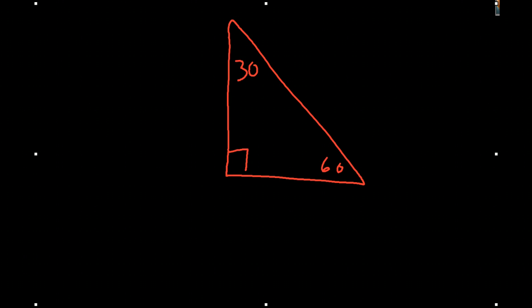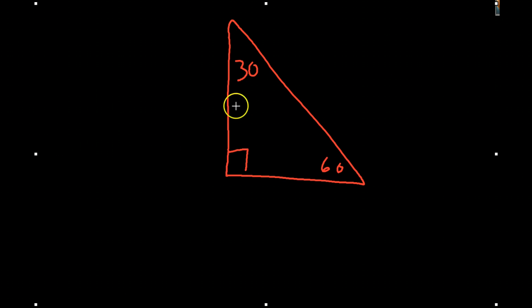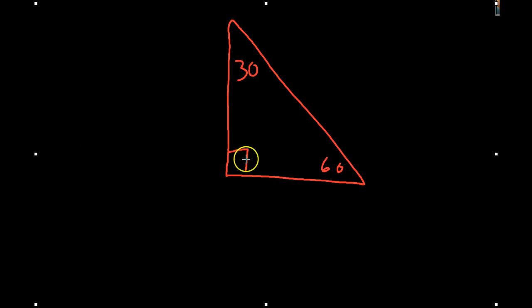The right triangle I want to talk about is the 30-60-90 right triangle, which has a 30-degree angle, a 60-degree angle, and then the right angle, or a 90-degree angle.